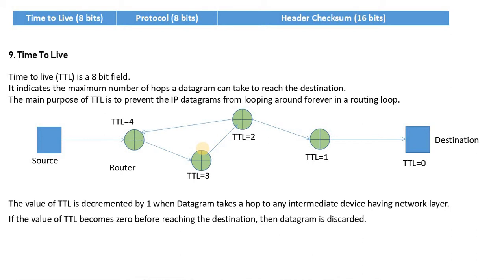Because it can be a number, what is this number in 8 bits? It indicates the maximum number of hops a datagram can take to reach the destination.